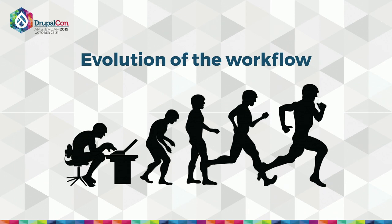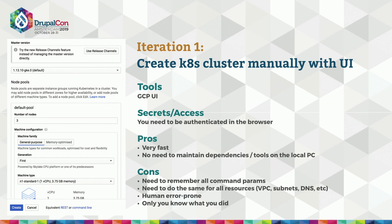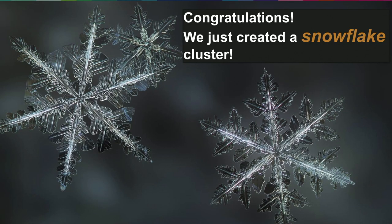It usually takes some iterations to get there. For creating a Kubernetes cluster, our first option is to create it manually with the Google Cloud user interface — log in with a browser, pick parameters like cluster version, number of nodes, node type, and other parameters, then hit the Create button. In a couple of minutes our Kubernetes cluster is created. It works, but it still has some cons. Congratulations — we just created our snowflake cluster.